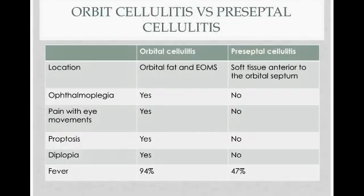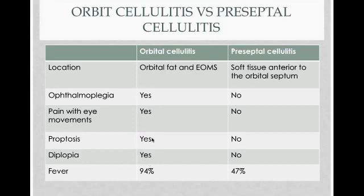Here's how you differentiate them. In orbital cellulitis, the infection involves the orbital fat and extraocular muscles, whereas in preseptal cellulitis, it's the soft tissue anterior to the orbital septum. This explains the symptoms: ophthalmoplegia occurs in orbital cellulitis due to involvement of the extraocular muscles, along with pain with eye movements because of muscle inflammation, diplopia, and proptosis.